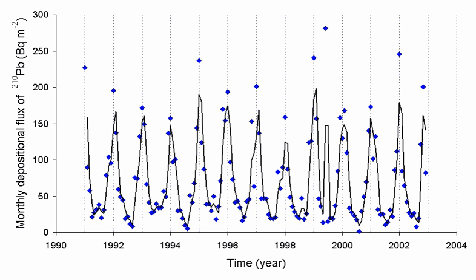Despite its short lifetime, radon gas from natural sources, such as uranium-containing minerals, can accumulate in buildings, especially, due to its high density, in low areas such as basements and crawl spaces. Radon can also occur in ground water, for example, in some spring waters and hot springs. Epidemiological studies have shown a clear link between breathing high concentrations of radon and incidence of lung cancer.